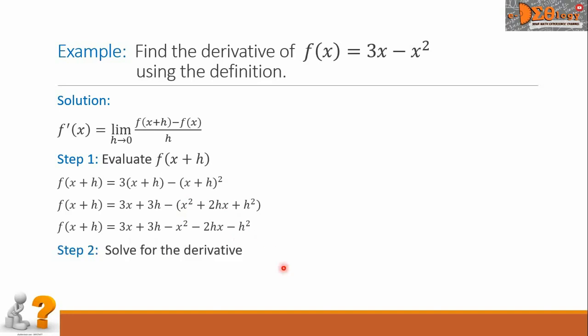And then, step 2, solve for the derivative. Let us now substitute the corresponding value of our formula here. So, we have now f'(x) equals the limit of this function f(x+h) is now the value that we solved from step 1. So, we have this big polynomial, we will write here, minus the f(x) is the given function here. So, we have 3x minus x squared, all over h, as h approaches 0.